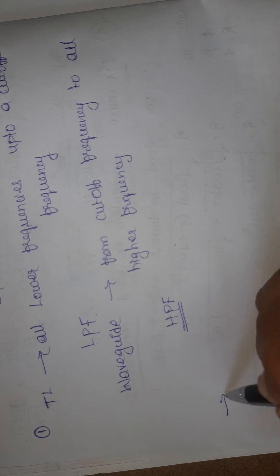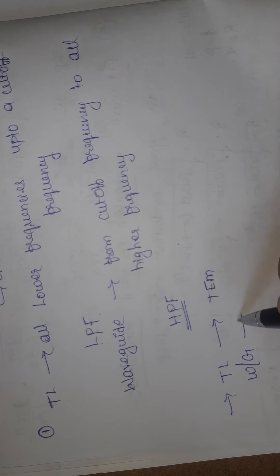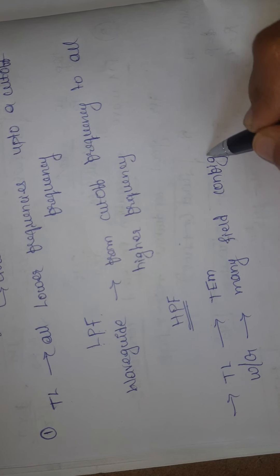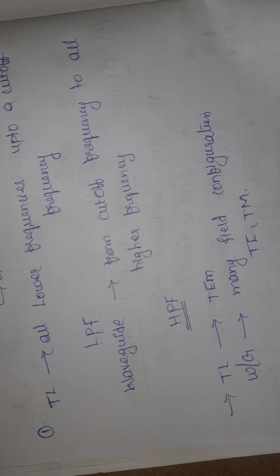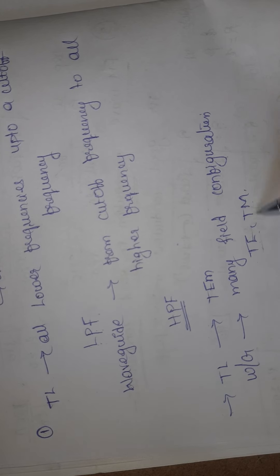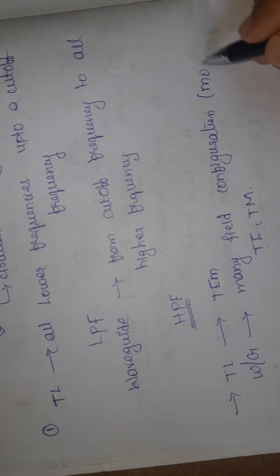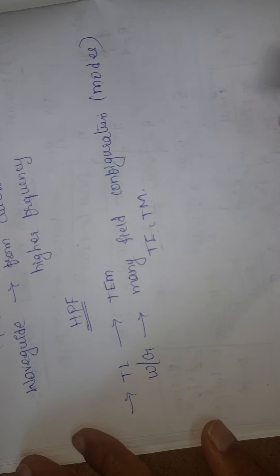Transmission lines can support only TEM configuration, whereas waveguides can support many field configurations — transverse electric (TE) and transverse magnetic (TM) configurations. Depending upon the type of waveguide, we have a number of modes for TE and a number of modes for TM. So waveguides allow many field configurations or modes, but transmission lines can allow only the transverse electromagnetic wave configuration.